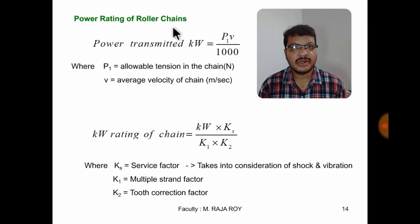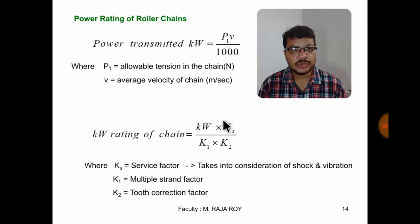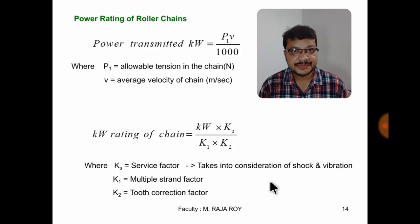Power rating of roller chains. The equation for power transmitting capacity is: Power = P1 × V / 1000, where P1 is the allowable tension in the chain in newtons and V is the velocity of the chain in meters per second. The power rating is calculated by multiplying power by the service factor Ks and dividing by K1 and K2. Ks is the service factor compensating for shock and vibration, K1 is the multiple strand factor, and K2 is the tooth correction factor — these three factors compensate for fluctuating loads.